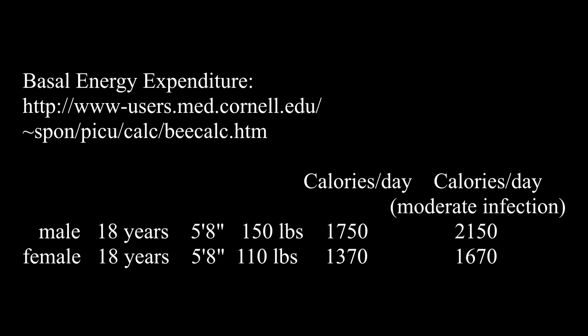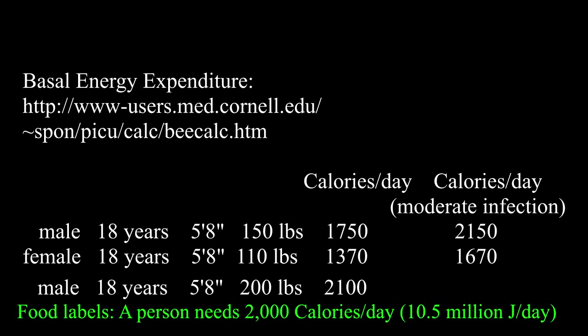People weighing 110 to 150 pounds need only 1300 to 1800 calories of food per day, while a person weighing 200 pounds needs 2100 calories per day. Food labels in the U.S. say that an average person needs to eat about 2000 calories per day, which is 10.5 million joules per day, but the average person in the U.S. eats 3600 calories per day. On the average, those of us in the U.S. should eat about half as much as we are eating. A restaurant-sized plate of food provides a day's worth of energy in a single meal. About 80% of the trouble with our weight is due to portion sizes. The lack of exercise accounts only for the remaining 20% of the problems caused.